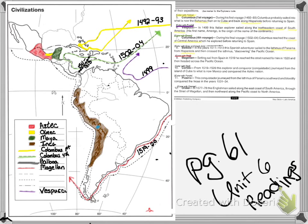Cortez is going to be colored in red, from 1519 to 1526. This explorer and conqueror — or conquistador — journeyed from the island of Cuba to what is now Mexico and conquered the Aztec nation. From Cuba to Mexico, there is only one line on the map.